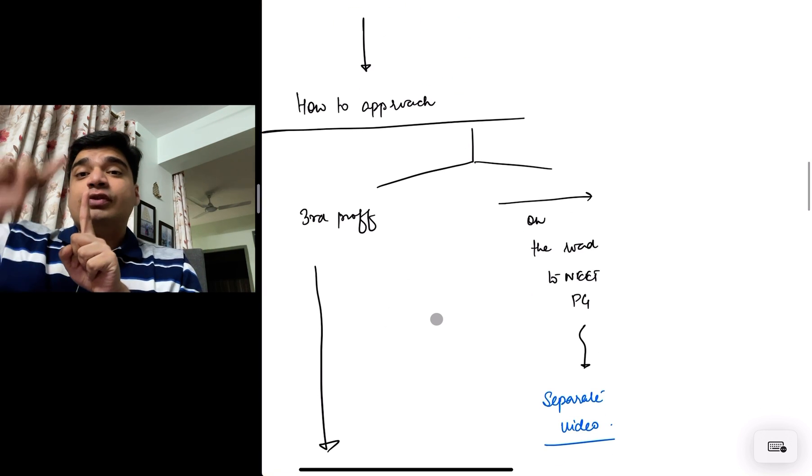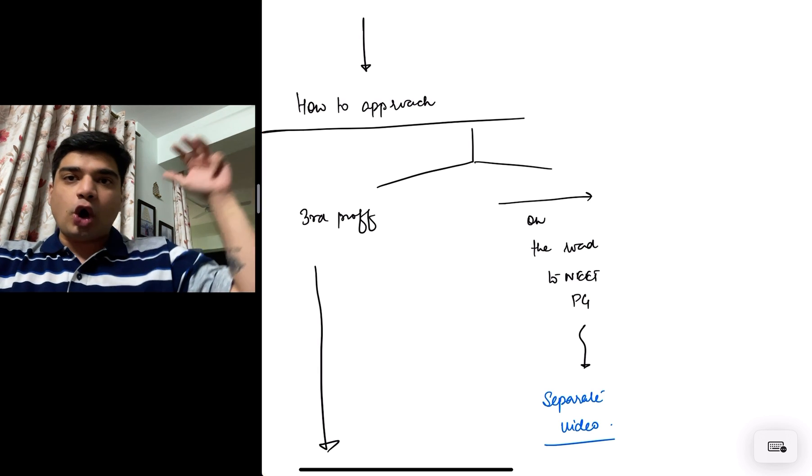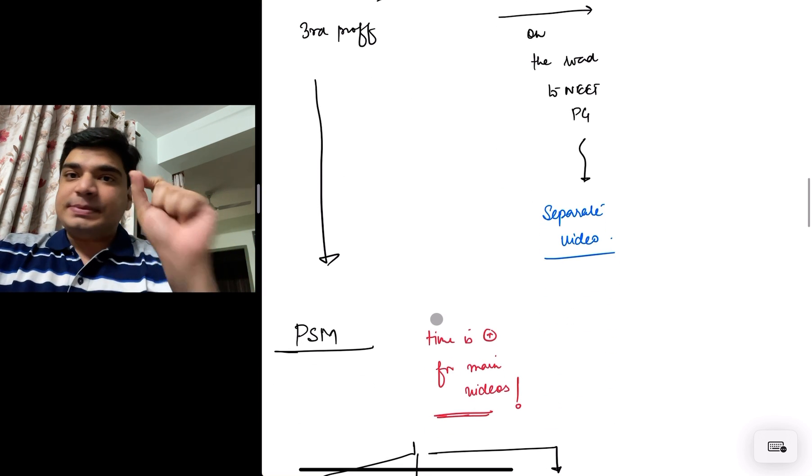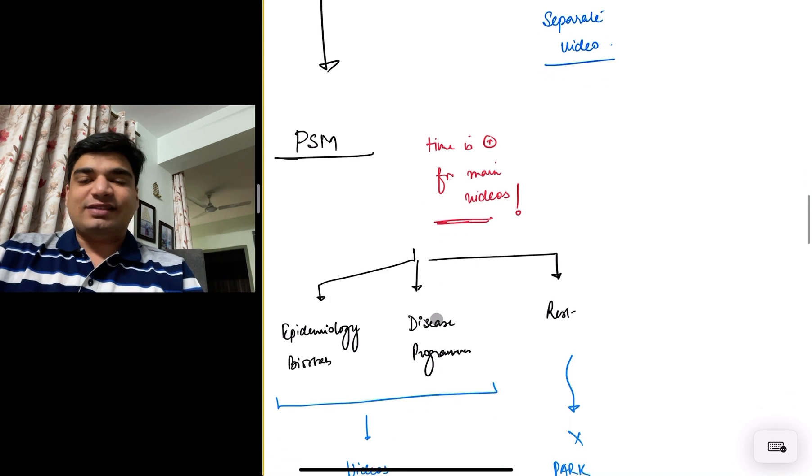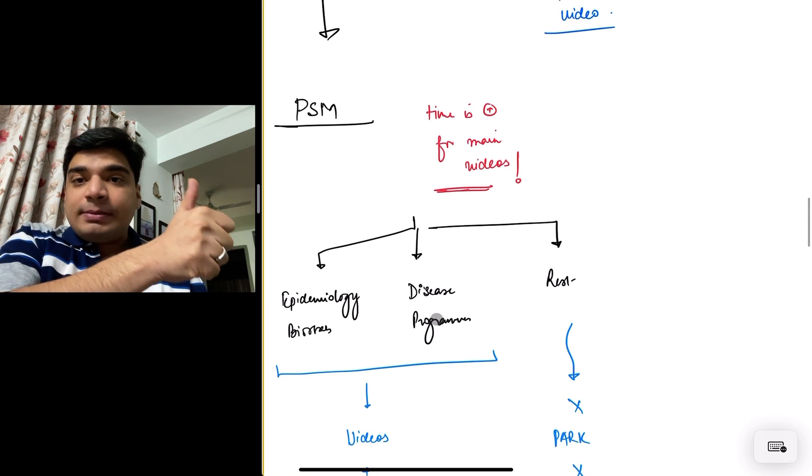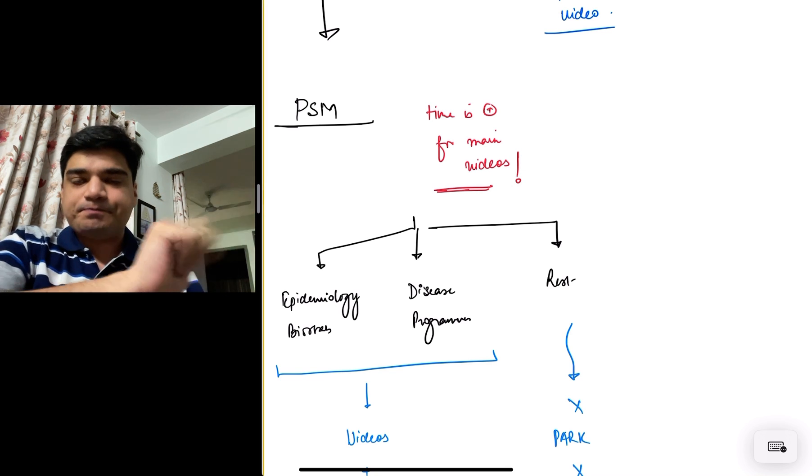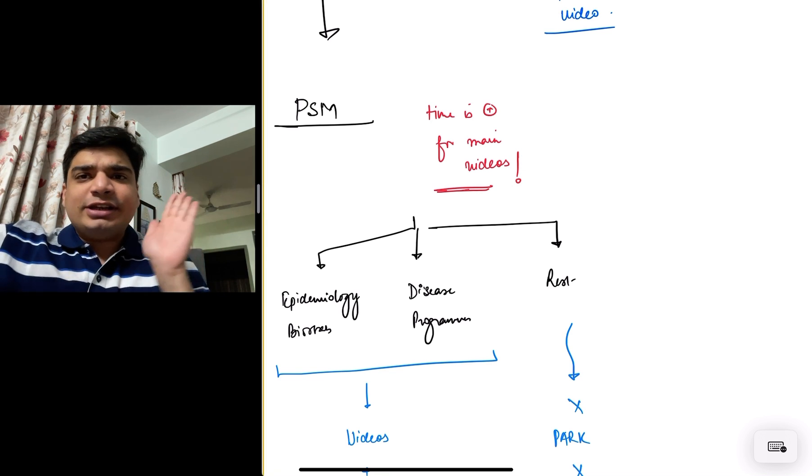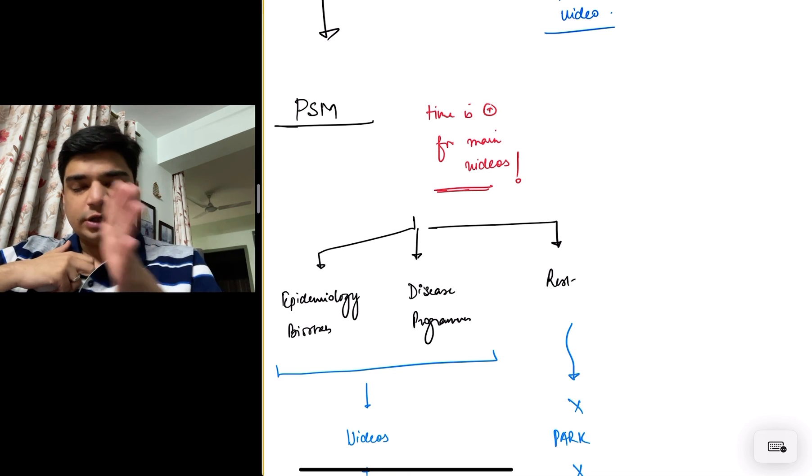So how do you approach it? Now, how do you approach it from a PG point of view? Another, like I said, separate video, but from a prof point of view, all these subjects, I'll start with PSM first. Now PSM can easily be divided into three broad categories. Epidemiology and biostats, disease and its programmatic management, and the rest. And I think all three are 33, 33, 33 percent in Park as well.